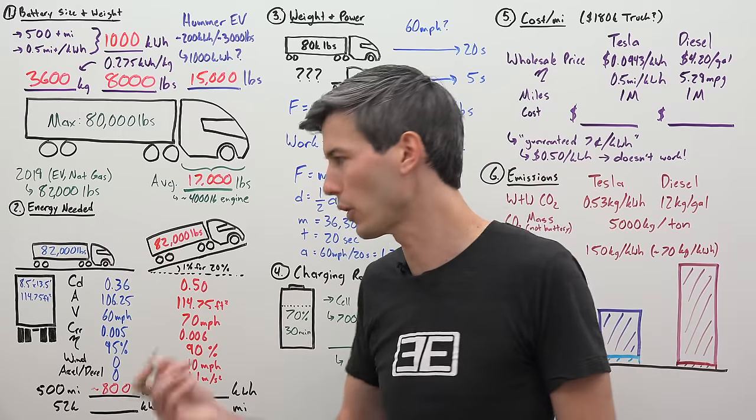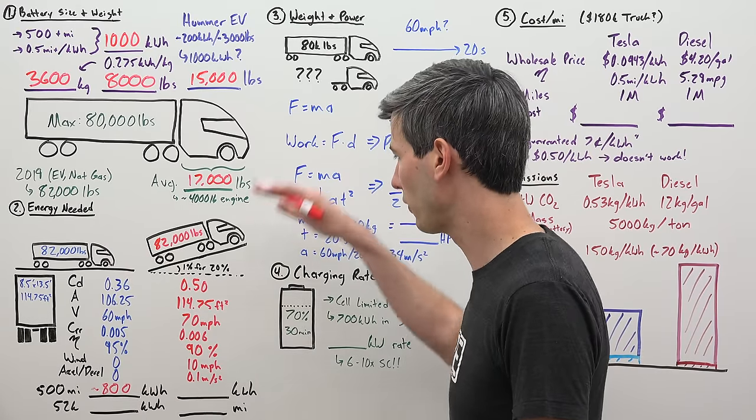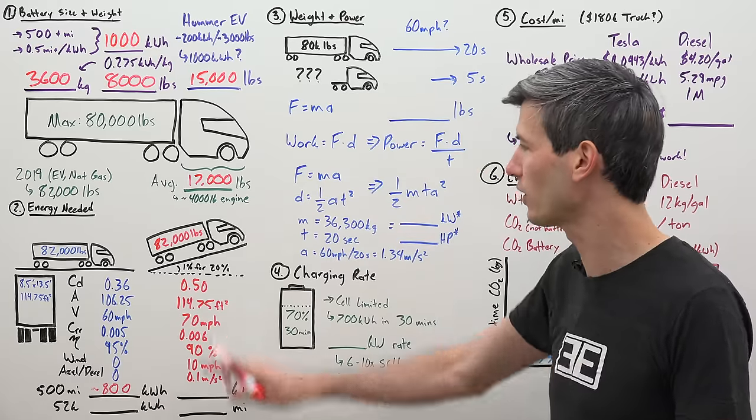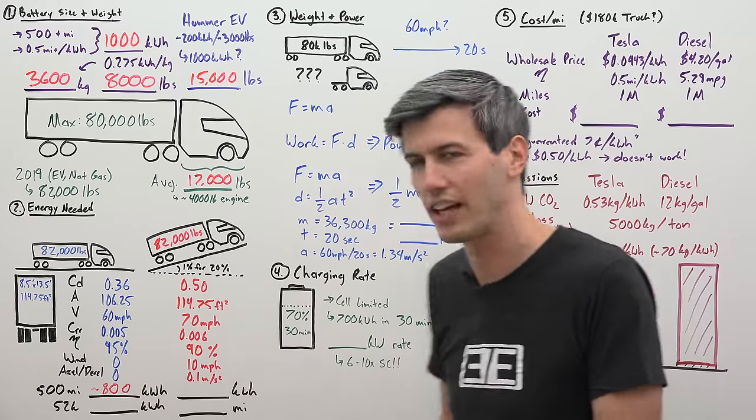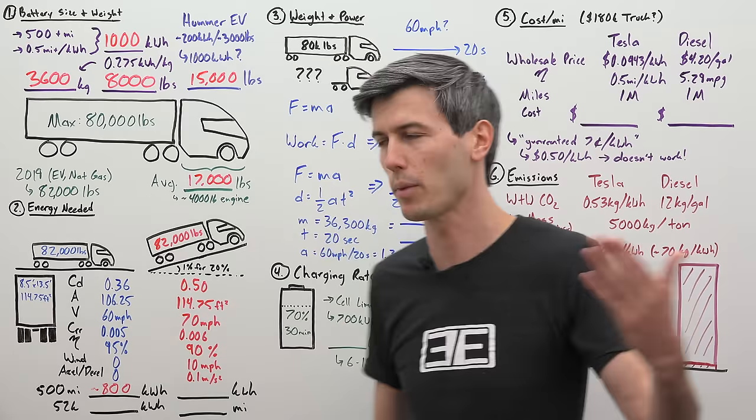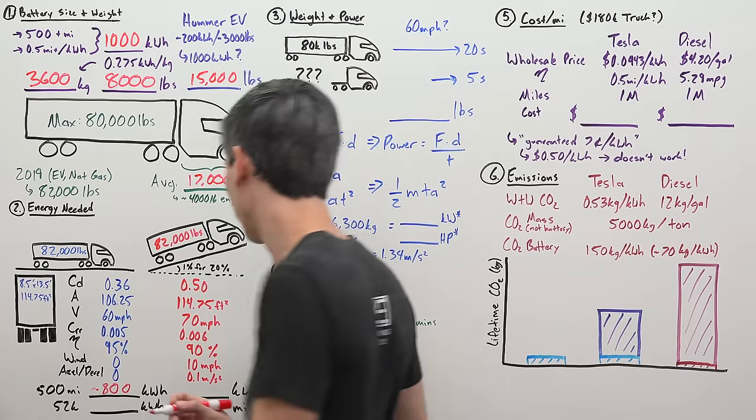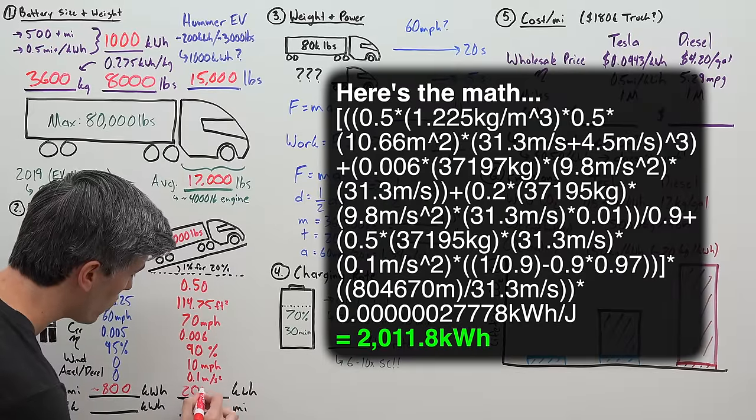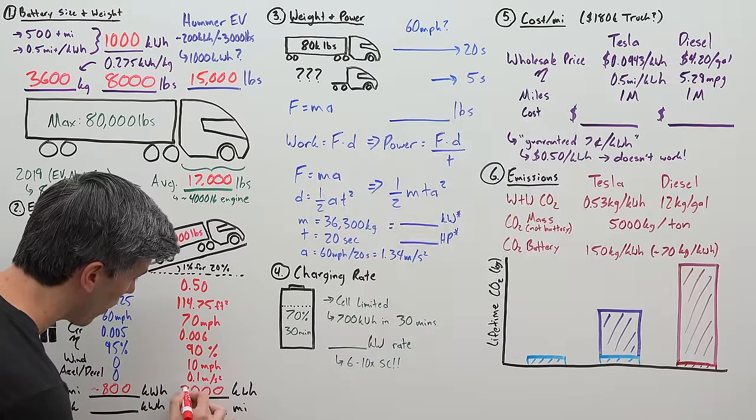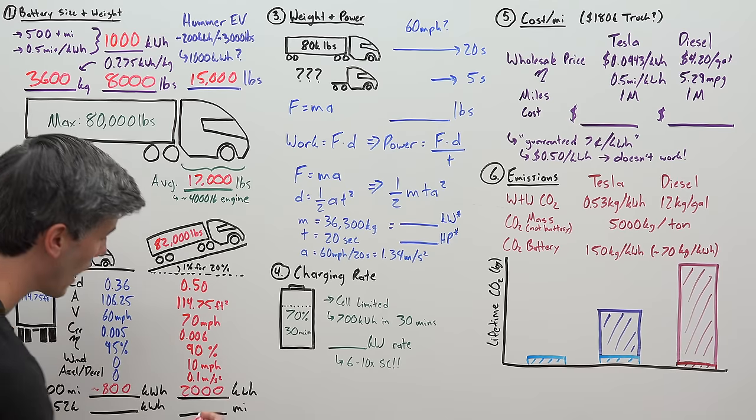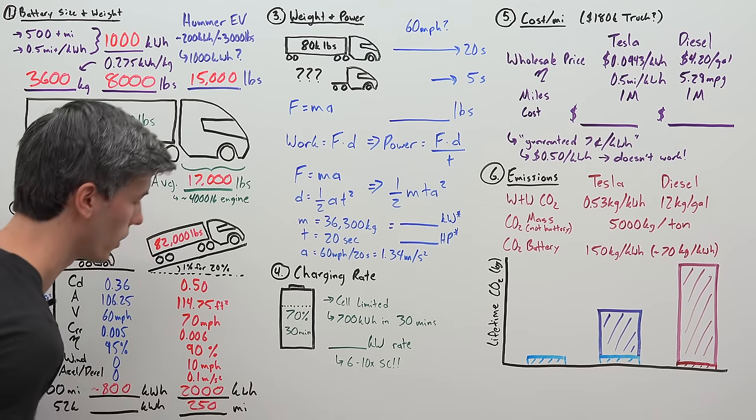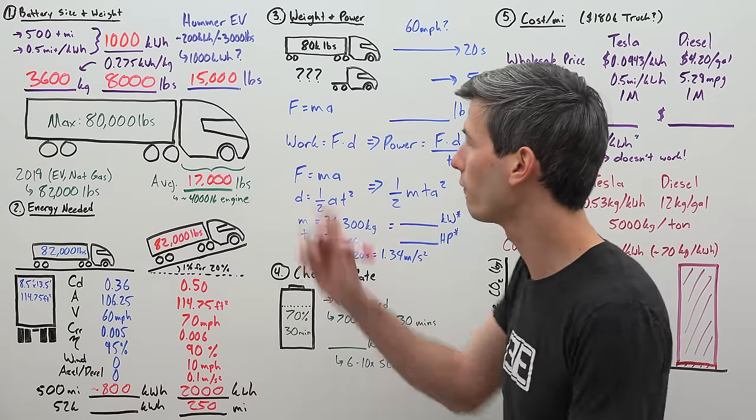If you do the math there, which isn't unfeasible, right? These are not numbers that are crazy. If you do the math, that gives you about 2,000 kilowatt hours of required energy, meaning the actual range of this truck in these conditions is just 250 miles rather than 500.